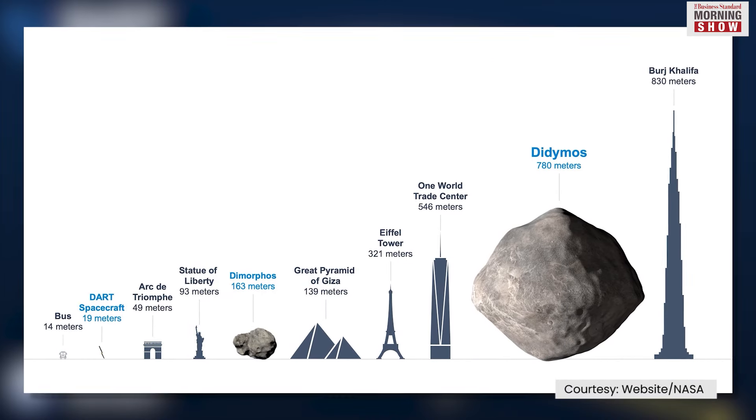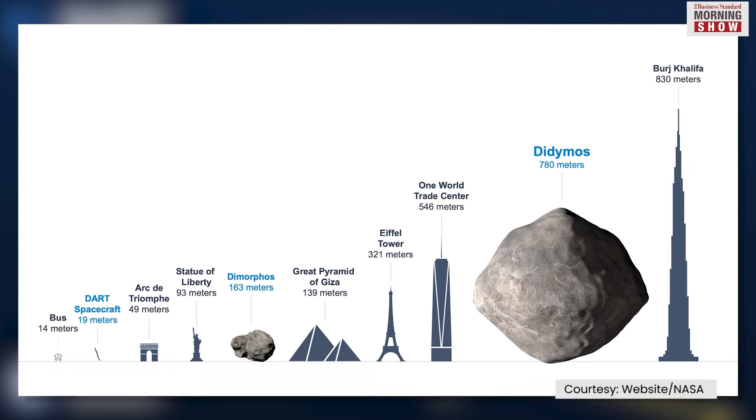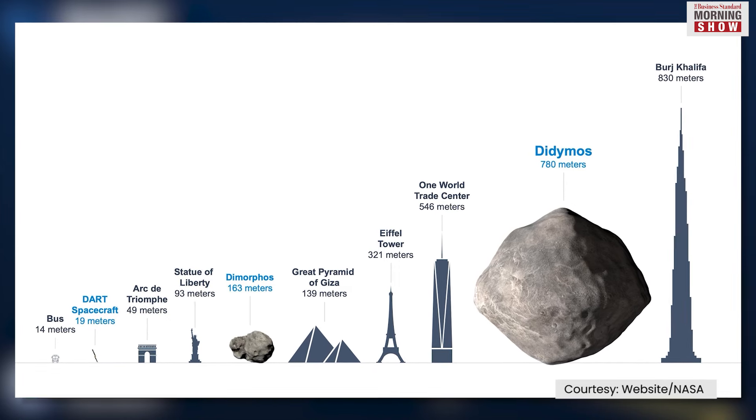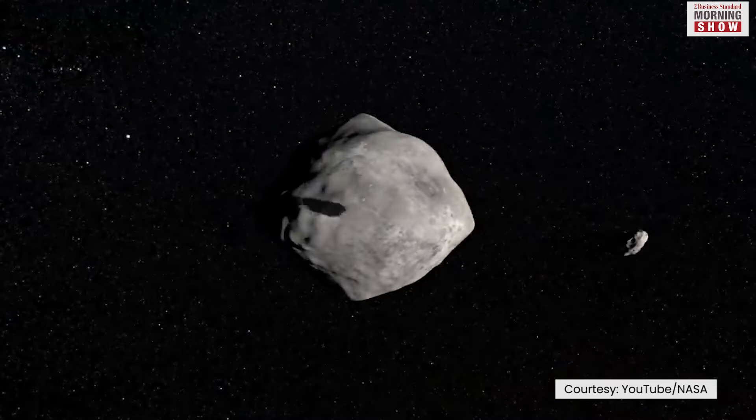Dimorphos is about 170 meters in diameter and orbits a parent asteroid five times larger called Didymos, which is 10 kilometers long. Both asteroids don't pose a threat to Earth.